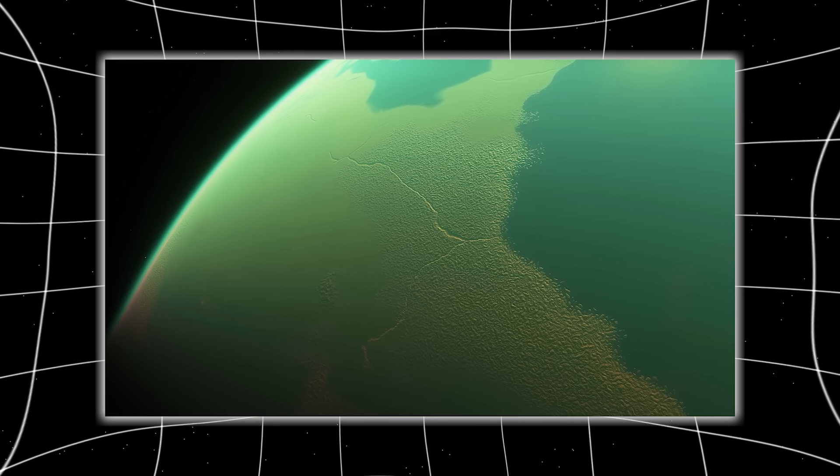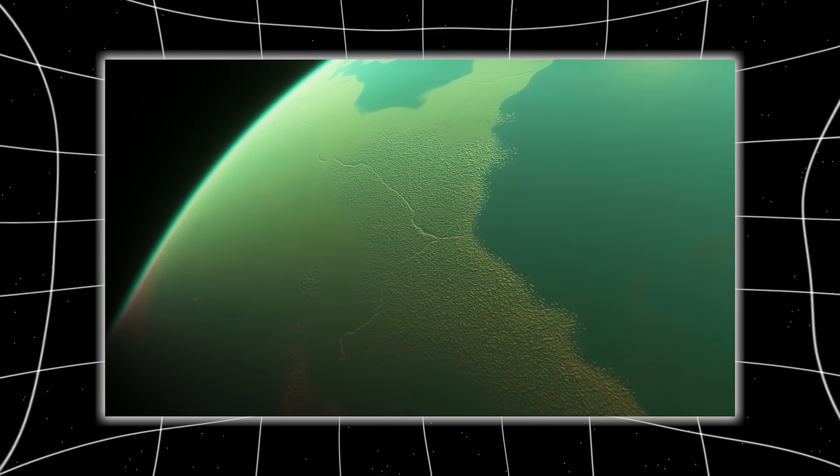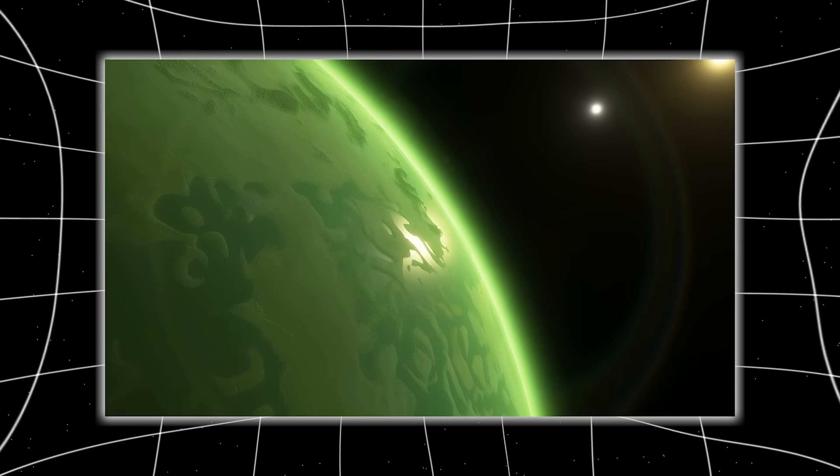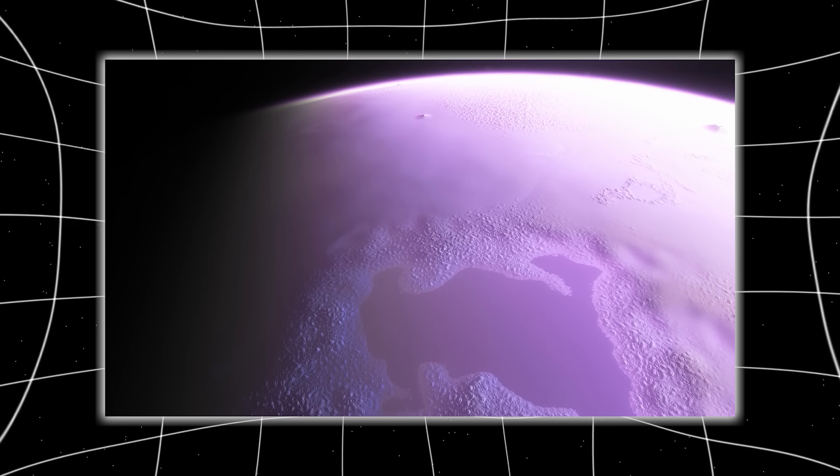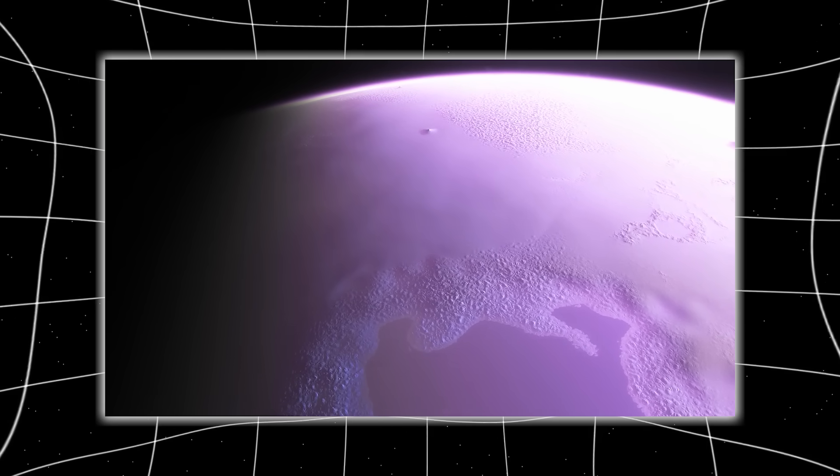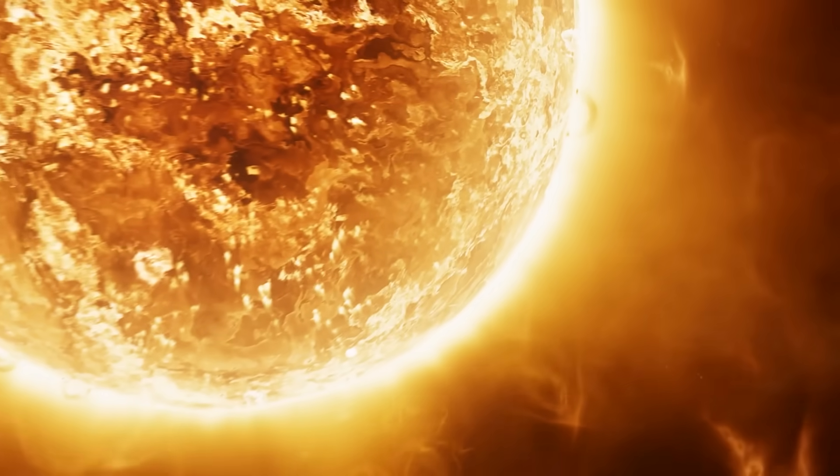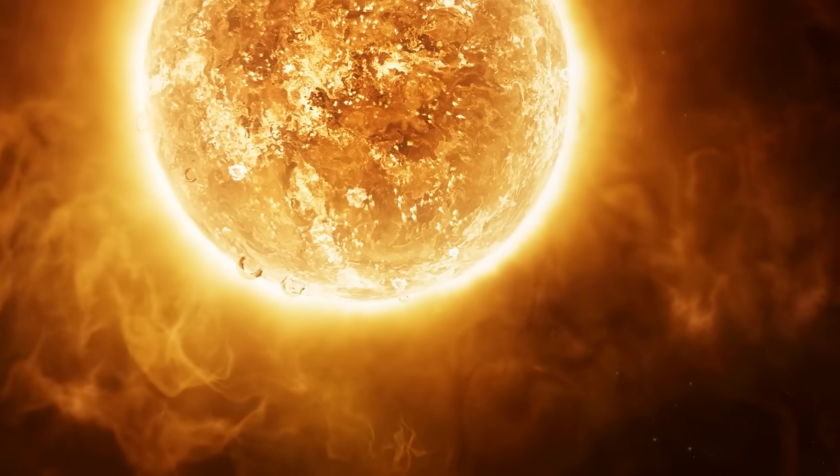That stability could mean one thing, habitability. Instead of chaotic, storm-torn worlds, these planets might sustain mild, temperate climates beneath their hazy skies, shielded from solar radiation by the same tholin chemistry that cools Pluto.